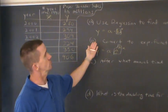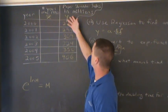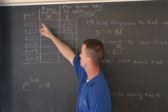Hey everyone, in this problem we're gonna use regression to find an exponential function to data. Here's the data everyone, it's paper shredder sales in millions, and these are the years.